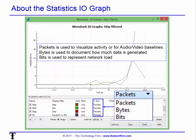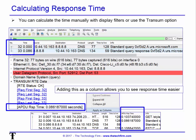In the IO Graph, the default is packets, but you might want to use bytes or bits. Packets per second I always use to visualize things like audio/video output to make sure it's fairly consistent — that's for non-variable bit rate streams. Bytes is great for documenting how much data is being generated, like a database query. Bits is great to represent network load — we're network people, we want to know 10 megabits, 1 megabit, 50 megabits — and that's a good way of displaying that.